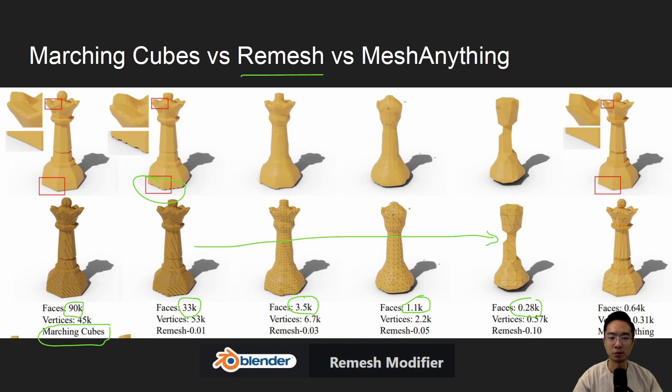So you can see the issue with the remeshing process here is that as you remesh it, it tends to over-smooth some of the surface. Whereas if you look at the last column, so this is using Mesh Anything, it tends to have much fewer faces compared to the original. So here we're looking at 0.64,000 faces. And you can see the overall structure is still pretty good. And you can see some of the parts that it had issues with previously, which is the corner on the bottom, it does a much better job.